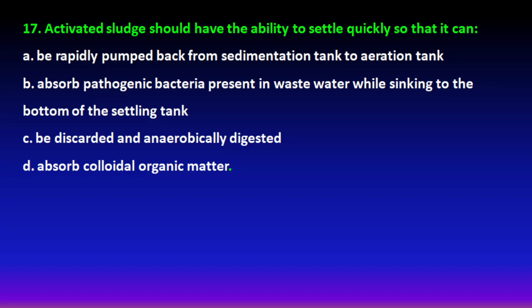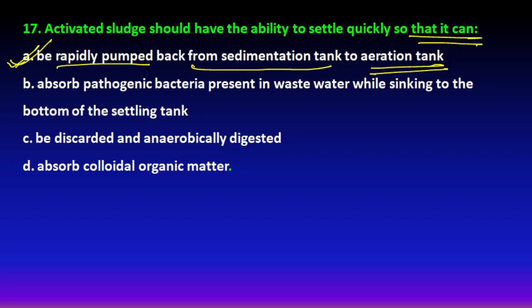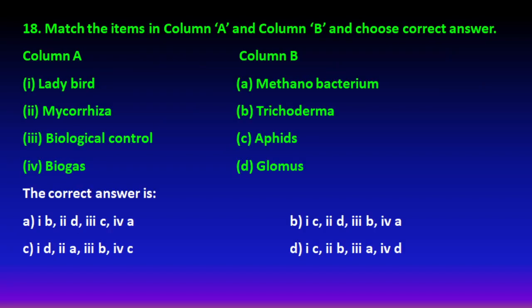Next question: activated sludge should have the ability to settle quickly. This is because activated sludge is used as an inoculum — it is added back to the system. When it settles rapidly, it can be pumped back quickly from the sedimentation tank to the aeration tank, where aerobic digestion occurs. So the ability to settle down easily so it can be reused as an inoculum is the answer; option B is correct.